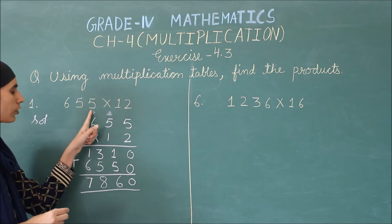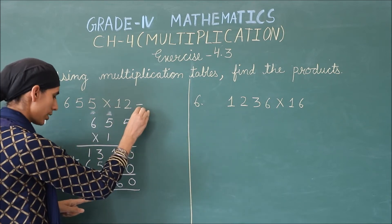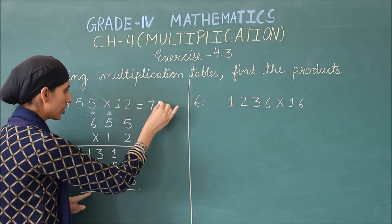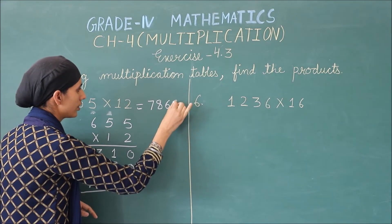6 plus 1 is 7. So, 655 multiply by 12. Your answer is 7860.